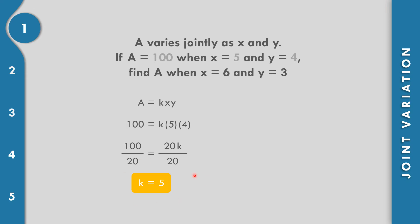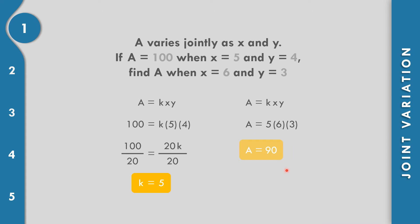Now let us find A when x equals 6 and y equals 3. Using k equals 5, we have A equals 5 times 6 times 3. So A equals 30 times 3, which equals 90. The value of A is 90.